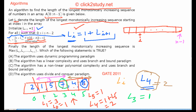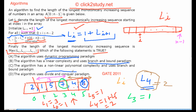So the algorithm says: start at L[n-1], then keep computing all the L[i] values for all indices. The length of the longest monotonically increasing sequence is the maximum of all these L[i] values. Now we have to answer which of the following is true: does this algorithm use a dynamic programming approach, a branch and bound approach, or a divide and conquer approach?